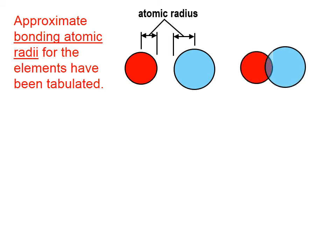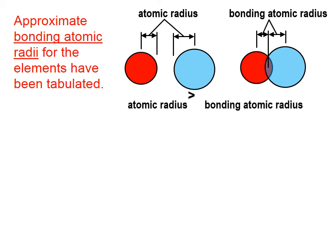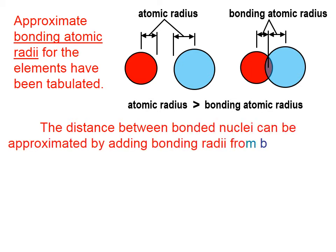If we bond these two atoms together, the bonding atomic radius goes from the nucleus of the atom in question to the center of that bond. In general, atomic radii are larger than bonding atomic radii. You can see that in the picture here at the top of the screen.